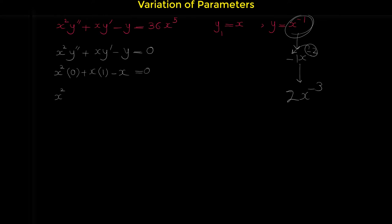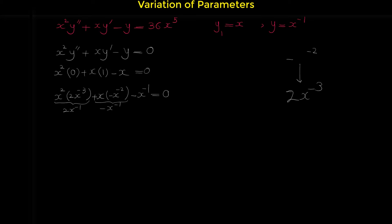So x squared times 2x to the negative 3, plus x times y prime. Y prime is negative x to the negative 2, and finally minus y, where y is x to the negative one. This equals 2x to the negative 1, and x times negative x to the negative 2 is negative x to the negative 1. So: 2x to the negative 1 minus x to the negative 1 minus x to the negative 1 equals 0. This shows that y2 equals x to the negative one is also a solution for the homogeneous differential equation.